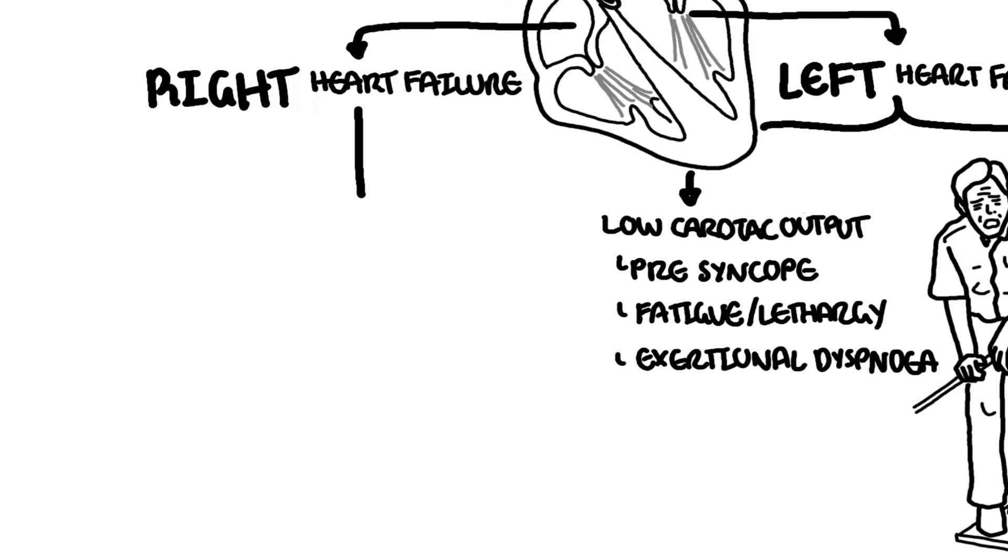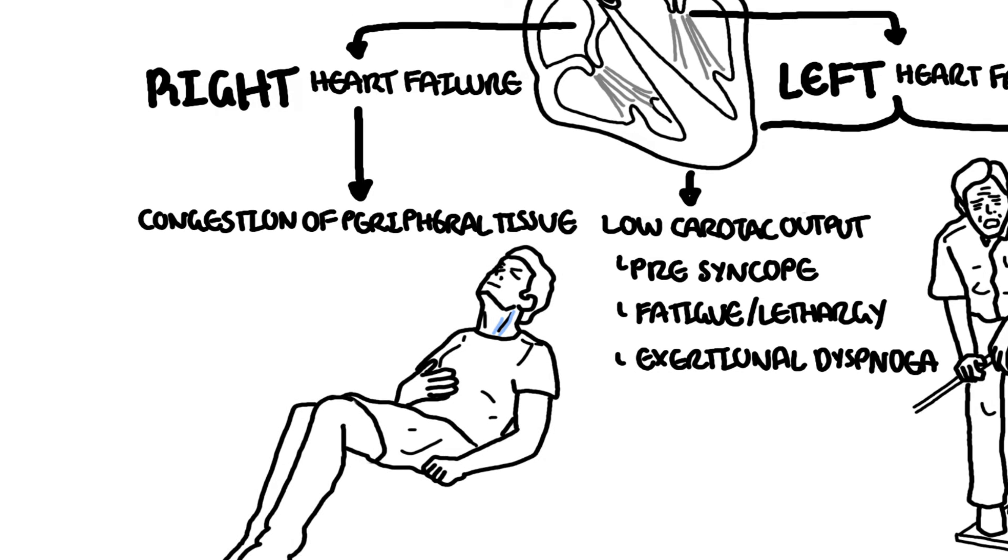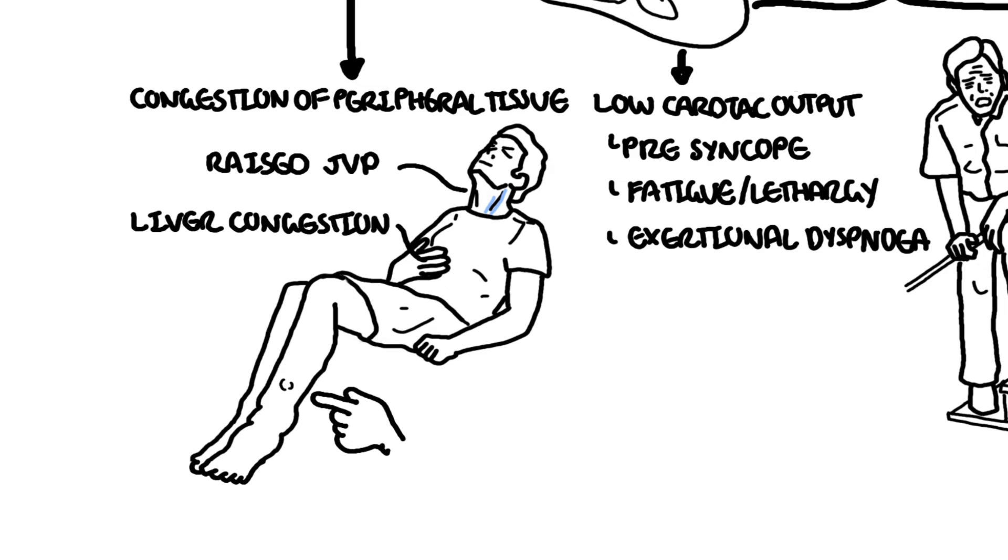Right-sided heart failure causes congestion of peripheral tissue, and this manifests as a raised jugular venous pressure, liver congestion with a sustained pulsatile liver, right ventricular heave and lower limb pitting edema.